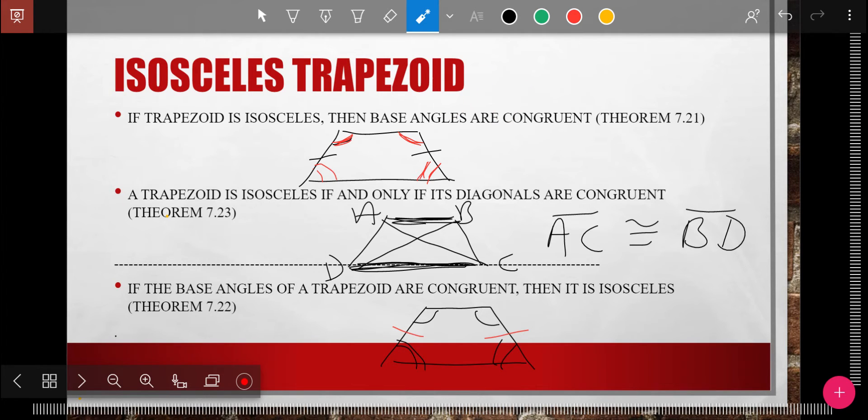And so how do I know it's isosceles? Well, because it's isosceles, what do I know? If it's isosceles, remember we said isosceles means base angles. Now these have two sets of base angles.